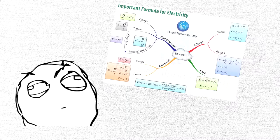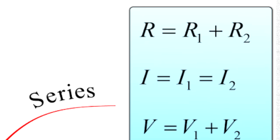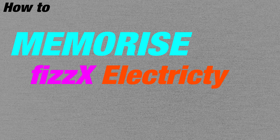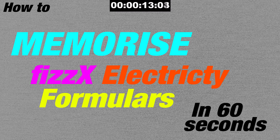It's 4am in the morning and you have a physics exam tomorrow. Your lazy brain just realized that there's an entire chapter on electricity. There's no way you can memorize 6 bajillion formulas in the time span given. So, this is how to memorize physics electricity formulas in 60 seconds.